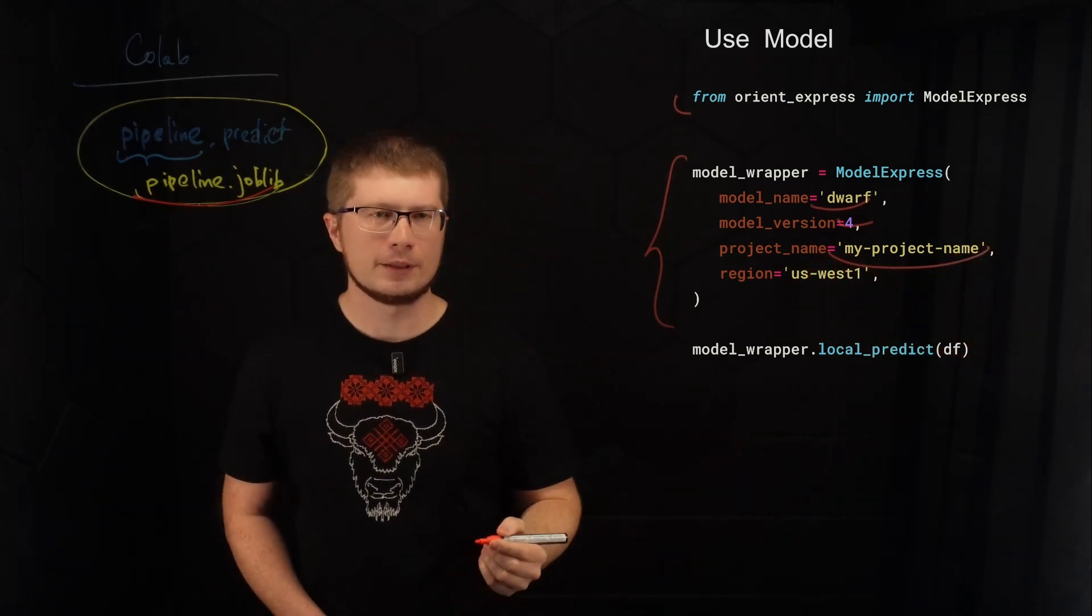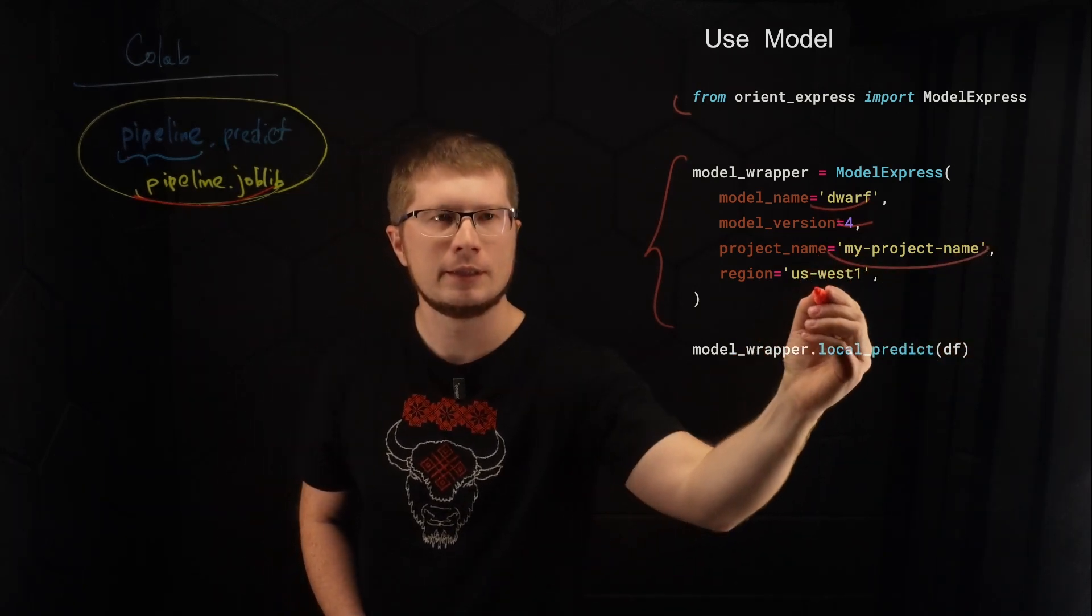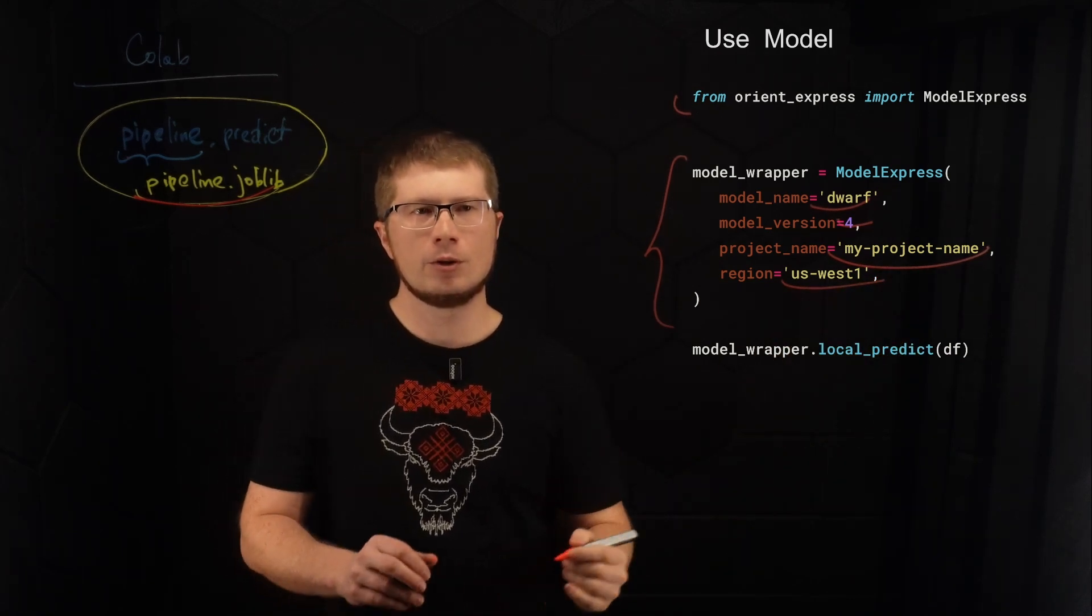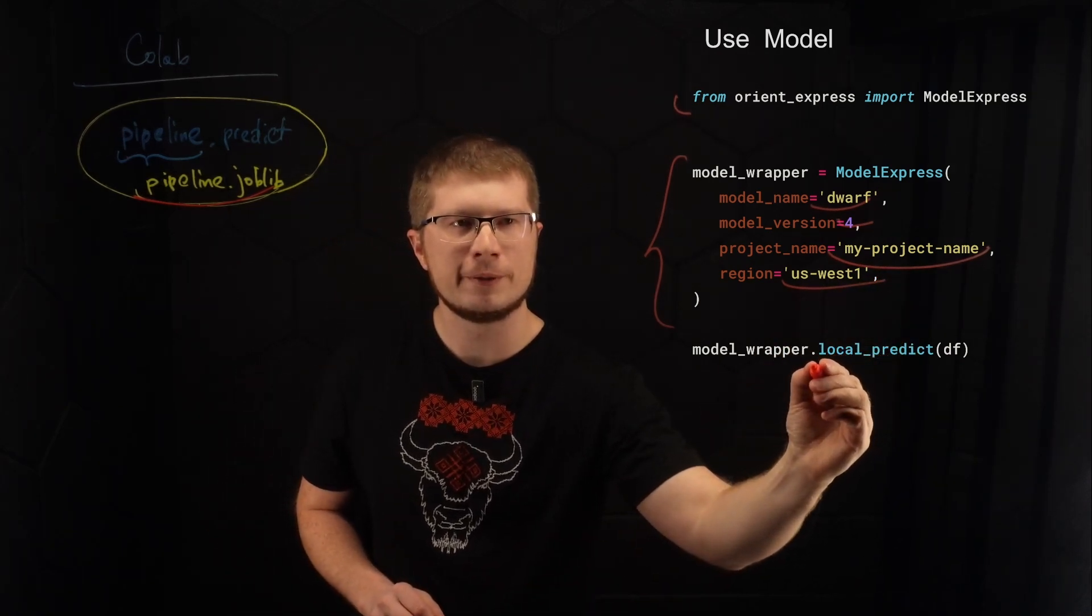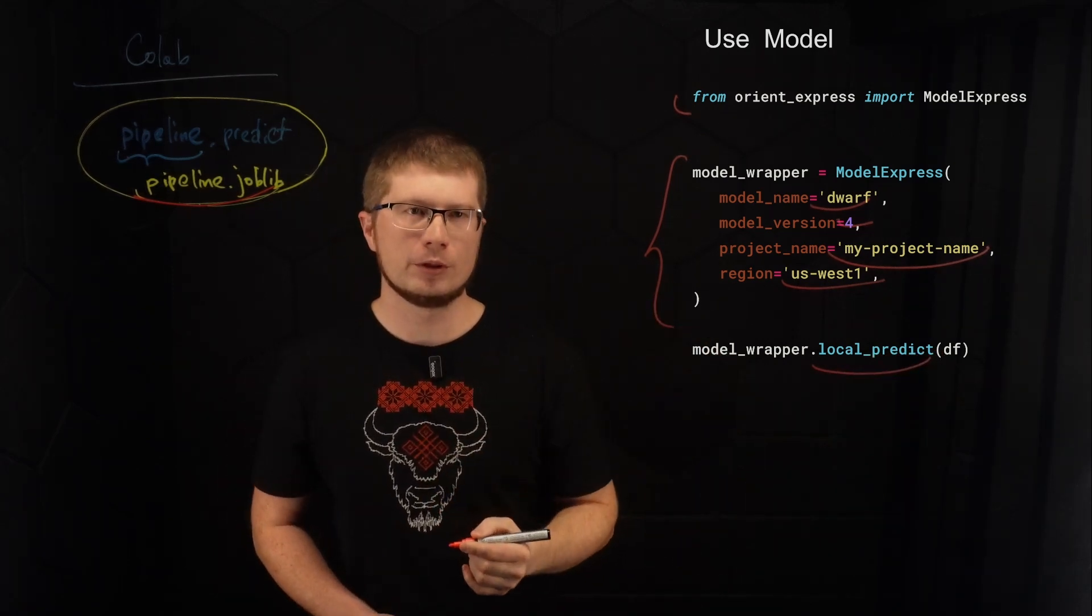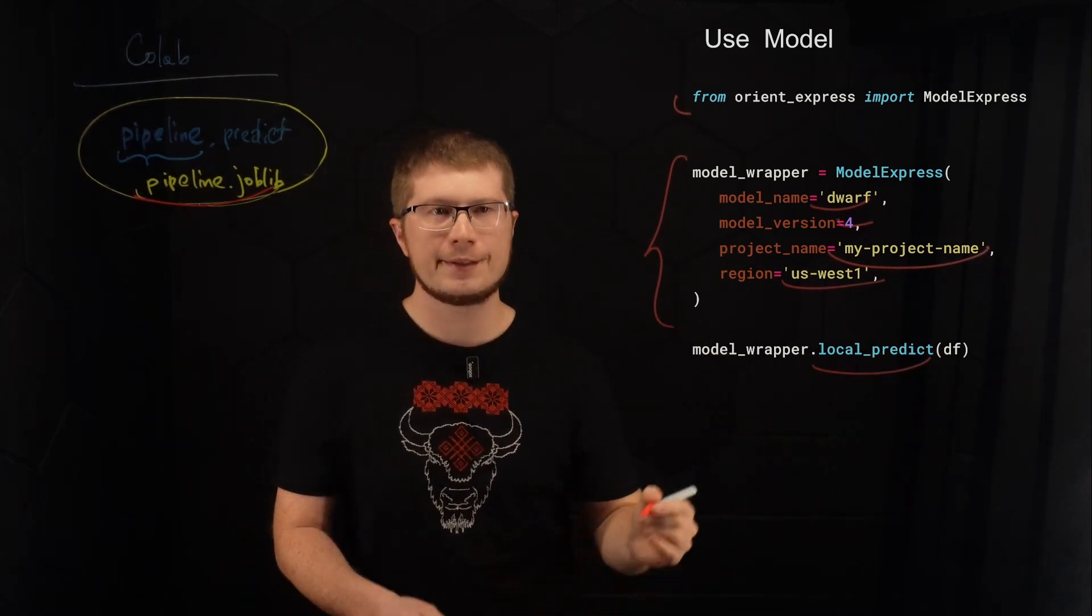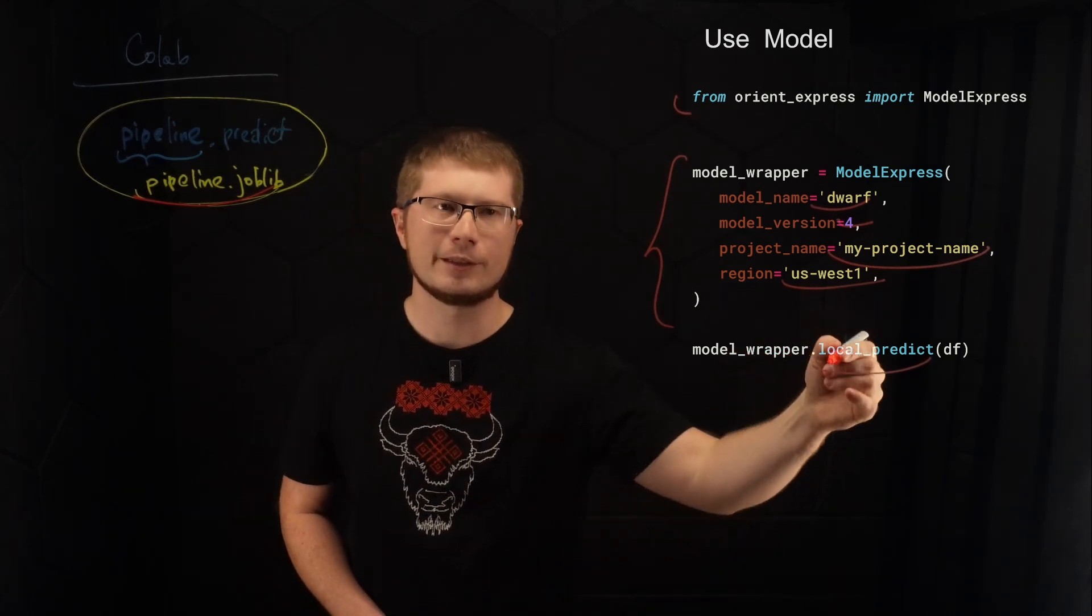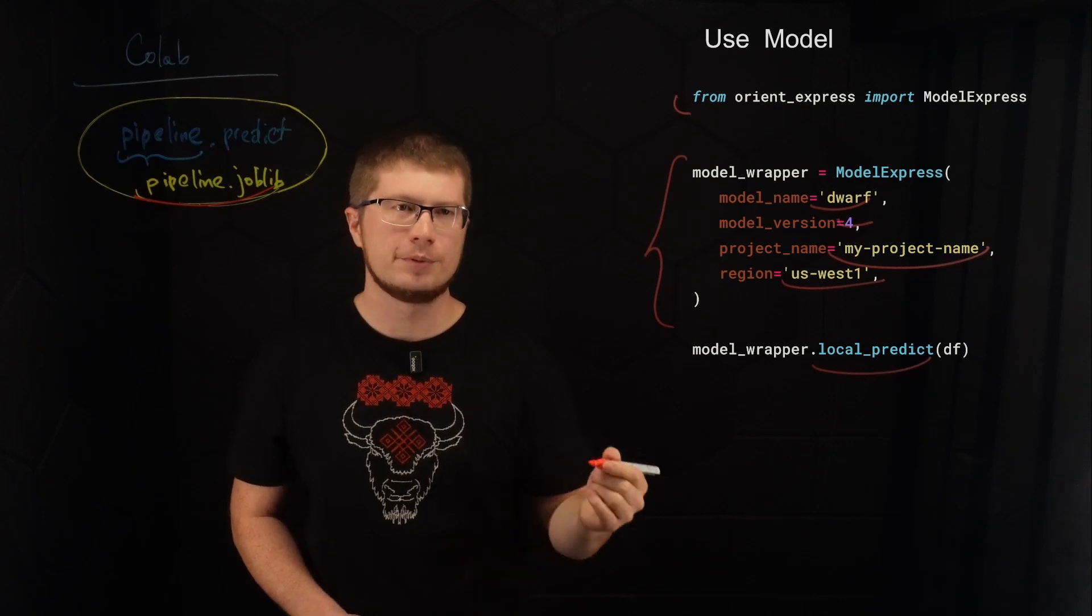Project name in Google Cloud, and this is the region where the model should be available. So once we perform local predict, it will first download the model from model registry and then do the inference. And also it will cache the model. So the next consequent calls will be performed.